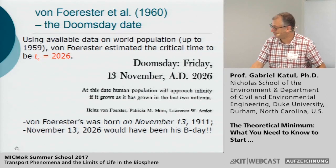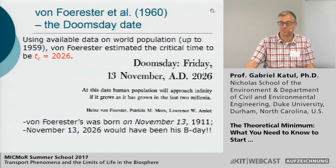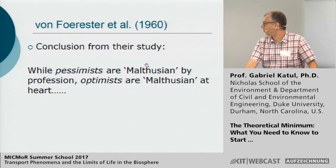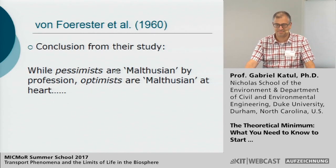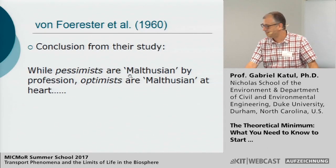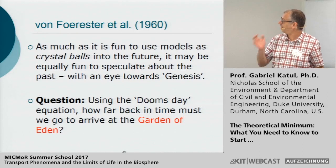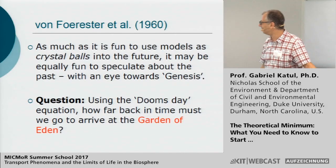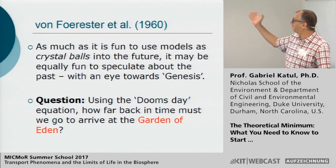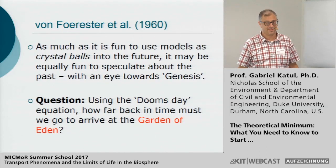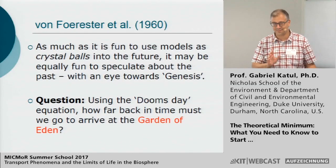Von Forrester's paper didn't stop there. To summarize: if you are a pessimist, you are Malthusian by profession — your job is to be negative. If you are an optimist, you are Malthusian by heart. But there's more: he asked, if we use the doomsday equation to go back all the way to the Garden of Eden — using time reversal — how long would it take to go back to a population of two? It turns out you would need more than 20 billion years. Since the age of the universe is 13.6 billion years, there's a discrepancy. His answer was that to reach a phase where carrying capacity depends on population, you need sufficient population base for information storage and infrastructure first.